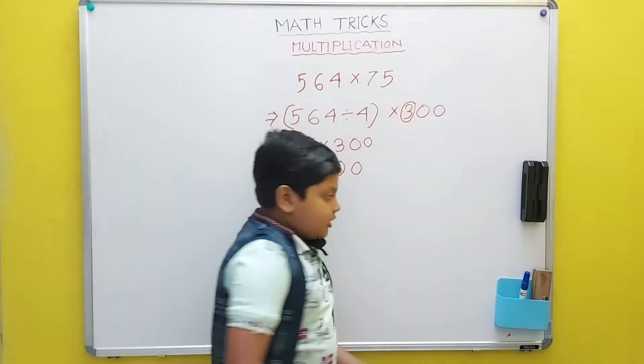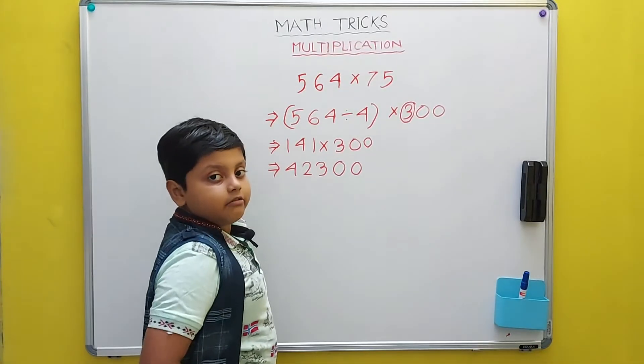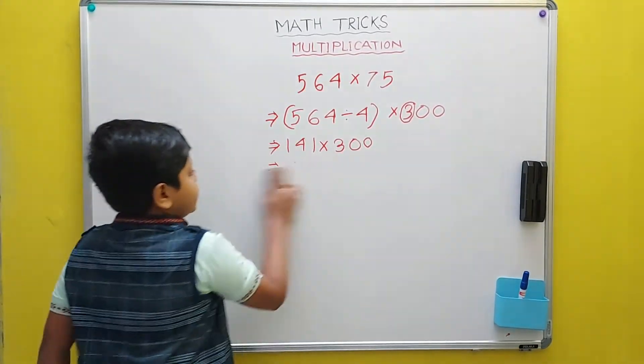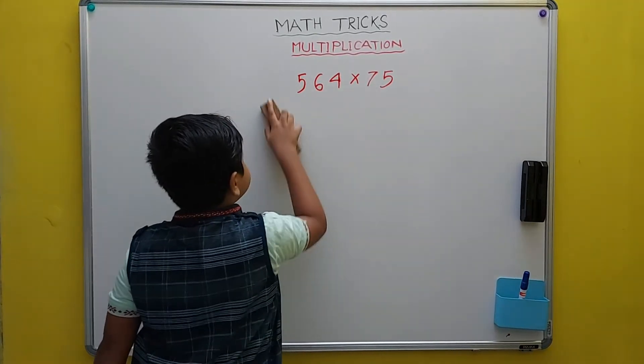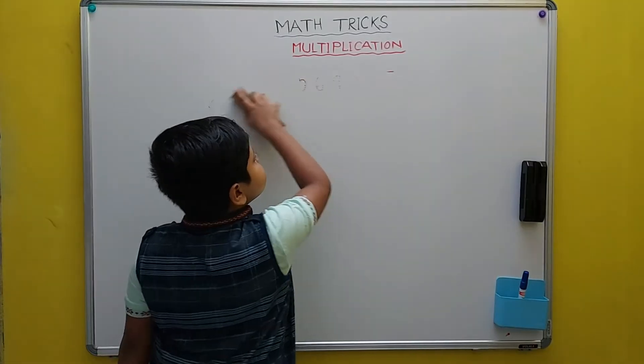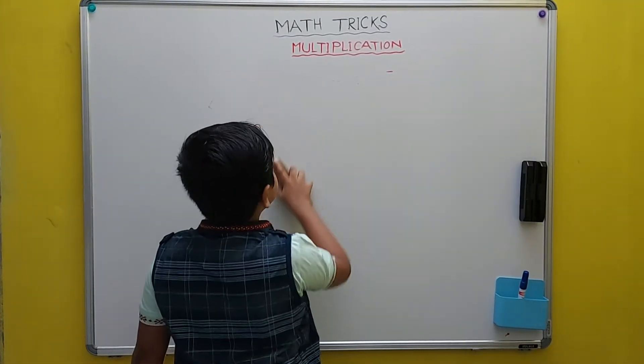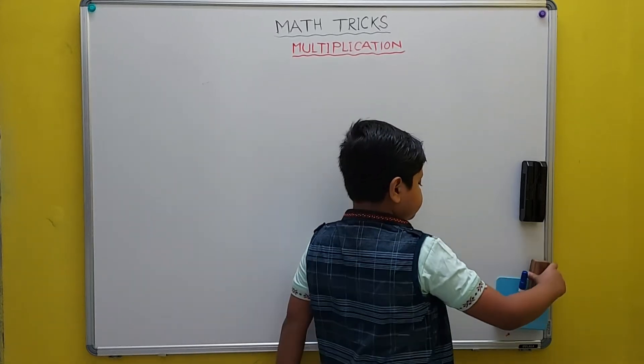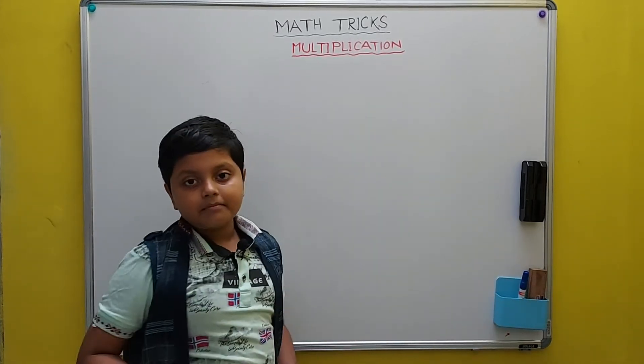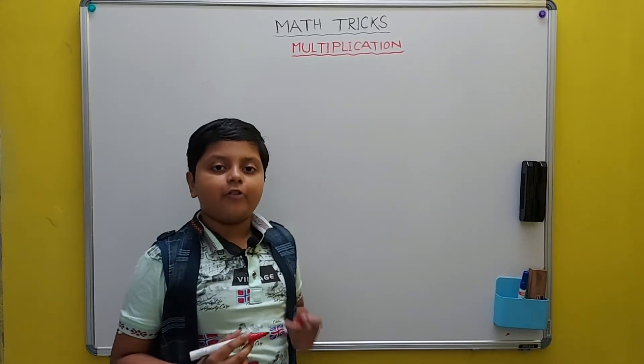And now, we will take another example, but with an odd number that is not divisible by 4. The next example is 349.